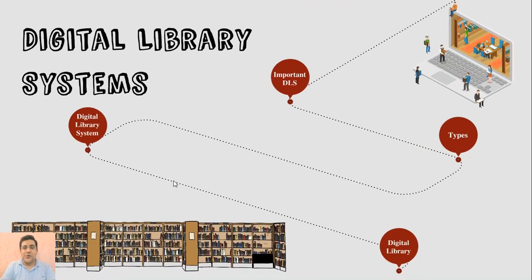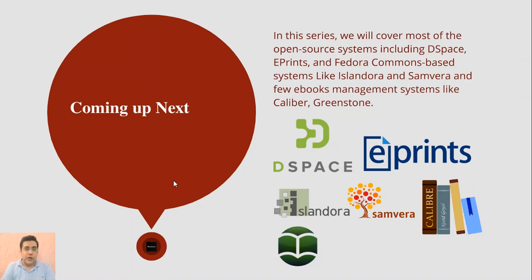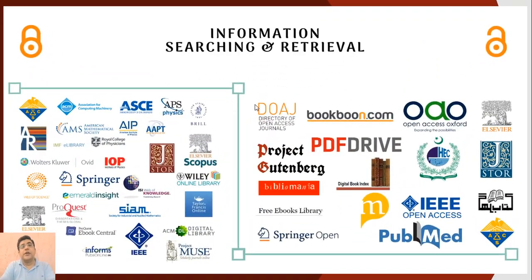We will cover most of the open source systems including DSpace, E-Prints, and Fedora Commons-based systems like Islandora and Samvera, and few eBooks management systems like Caliber eBooks Management and Greenstone. We will also work on information searching and retrieval databases — the closed access and open access databases — in a new series.